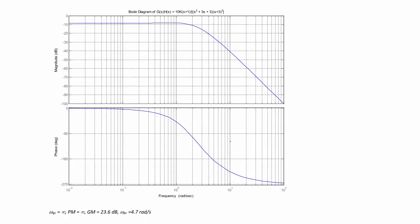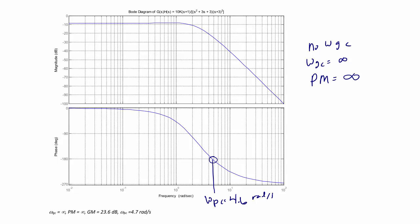Looking at the Bode diagram, notice that 0 decibels is at the top of the magnitude plot, so there is no frequency where the magnitude plot crosses 0 decibels. This means there is no gain crossover frequency, or equivalently the gain crossover frequency is infinity, which means the phase margin equals infinity. For the phase crossover frequency, the phase plot crosses negative 180 degrees at approximately 4.6 radians per second. Tracing that up to the magnitude plot, we determine how much the gain can increase to reach 0 decibels — that value is the gain margin, approximately 25 decibels.